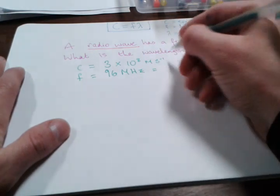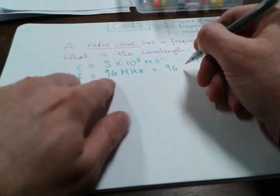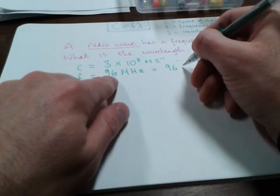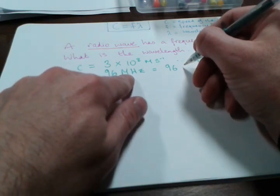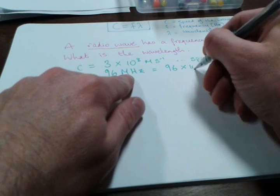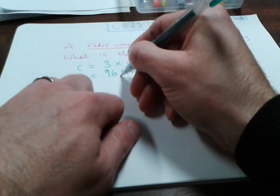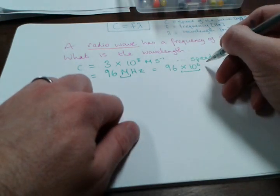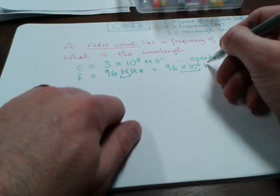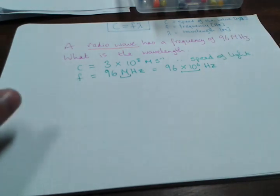The frequency is 96 megahertz, which is 96 for the number here. Because it's mega, you can say it's × 10^6, and then it's hertz after that. So now we're in SI units for the frequency as well.